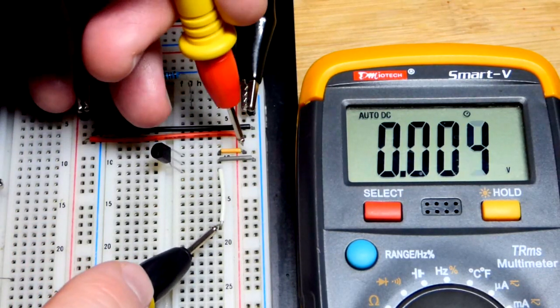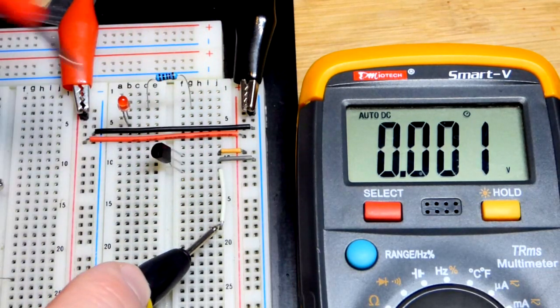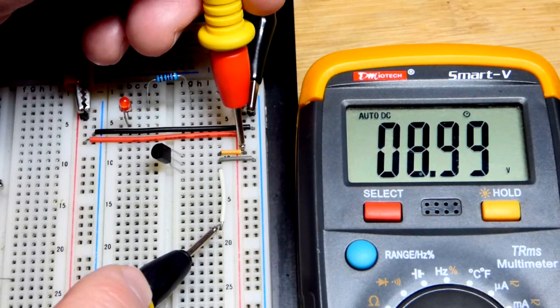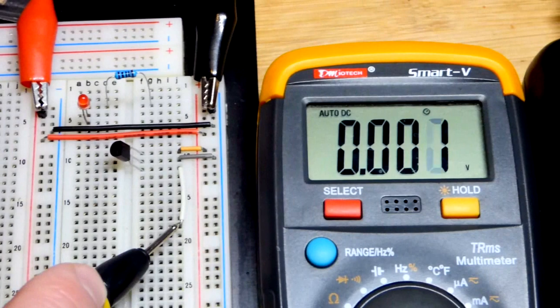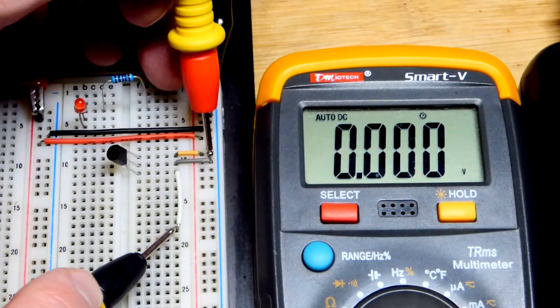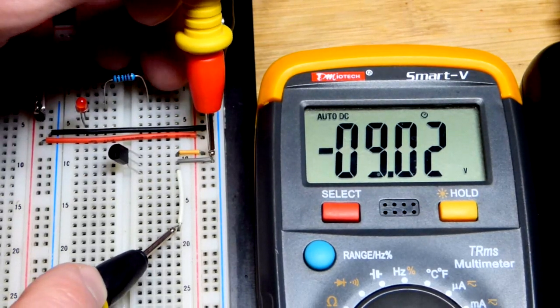So we will look in relationship to ground here. So you put the black probe where ground is when you want to know the voltage in relationship to ground. And there you can see we got positive 9 volts right there. And out of 18 total. And then at the negative supply now we have negative 9 volts in relationship to ground.